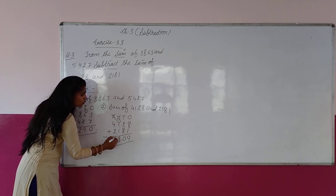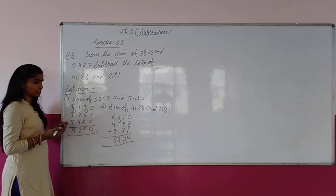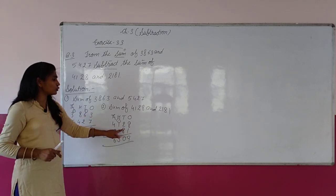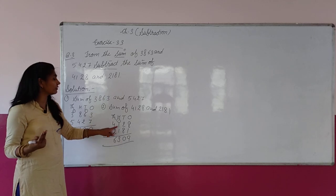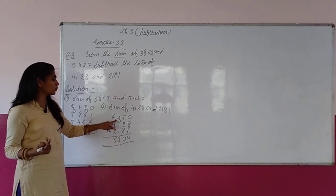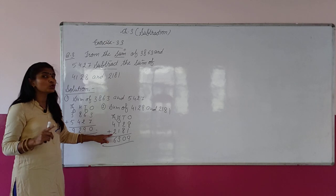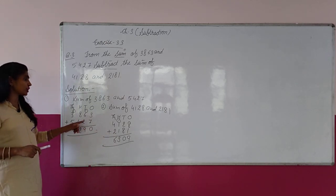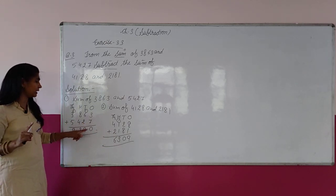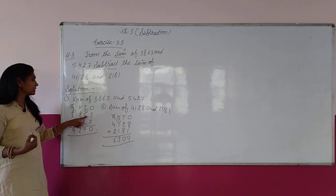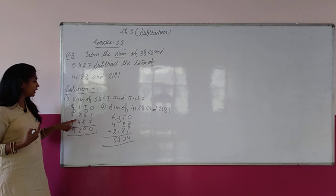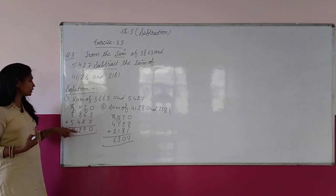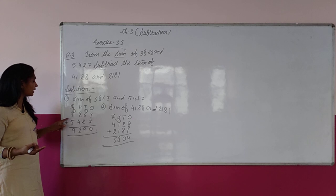Check करो: 8 plus 1 = 9. 2 plus 8 = 10, 10 के लिए 0, 1 carry. 1 plus 1 = 2, and 1 carry = 3. 4 plus 2 = 6. So the sum of 4,128 and 2,181 is 6,309. अब हमने दोनों का sum निकाल लिया.